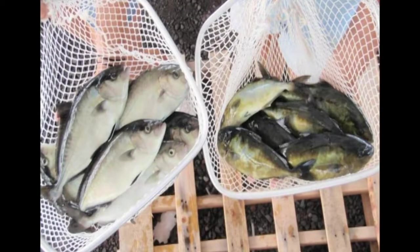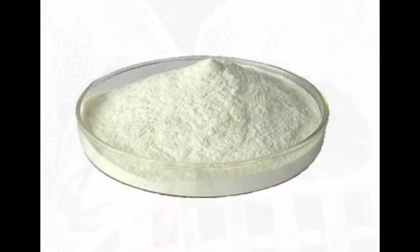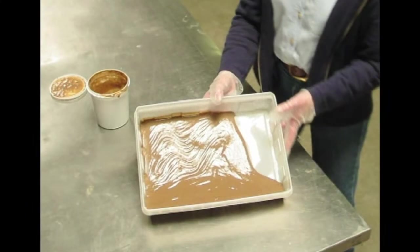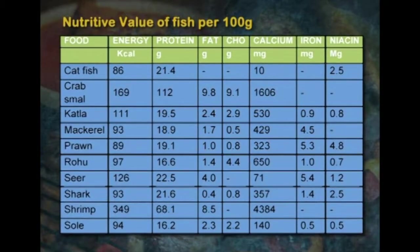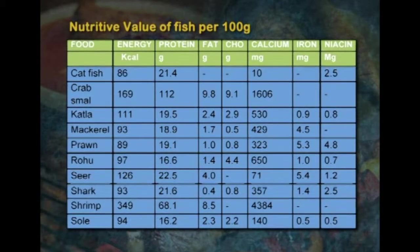Fish protein concentrate is a new product developed after extensive research. It is the name given to an edible fish product suitable for human consumption, prepared from fresh fish. This essentially odorless powder is very high in protein — providing about 70 to 80 percent protein with a good amount of lysine. It has high biological value, is light in color, free from grittiness, and can be incorporated at a level of 3 to 10 percent in a variety of dishes to supplement daily diets with high quality proteins. A table showing the nutritive value of various fish varieties per 100 grams, including mineral content, is provided for detailed study.